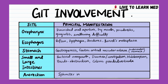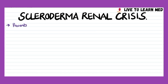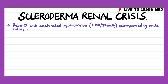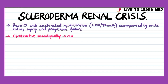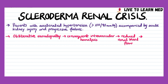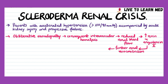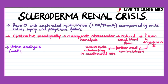Principal anorectal manifestations include sphincter incompetence, fecal incontinence, and rectal prolapse. Scleroderma renal crisis presents with accelerated hypertension accompanied by acute kidney injury and progressive failure. The pathogenesis involves obliterative vasculopathy of the renal arcuate and interlobular arteries with consequent intravascular hemolysis, leading to progressive reduction in renal blood flow, further aggravated by vasospasm. This leads to increased renin secretion and angiotensin 2 production, causing renal vasoconstriction and a vicious cycle culminating in accelerated hypertension.